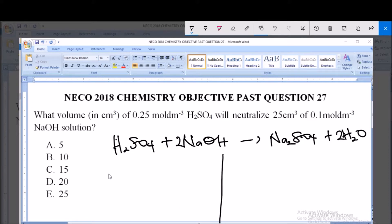Now from here we can simply use the formula CAVA over CBVB equals NA over NB. We have that CA, which is the concentration of the acid, is 0.25 mol/dm³.